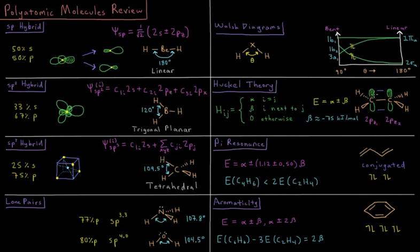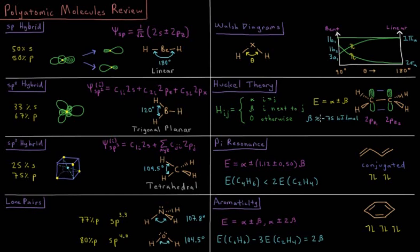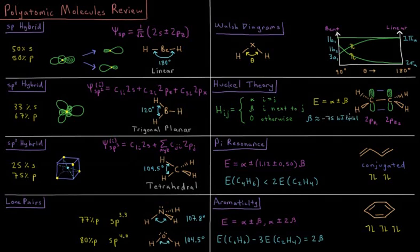This gives an energy of C2H4 ethylene of E equals alpha plus or minus beta, where beta is approximately minus 75 kilojoules per mole.